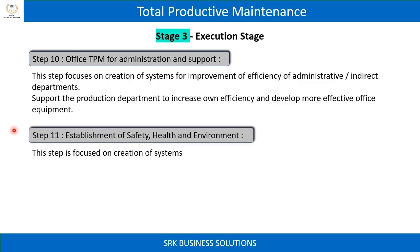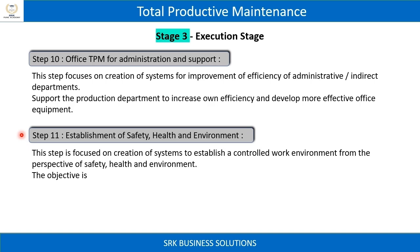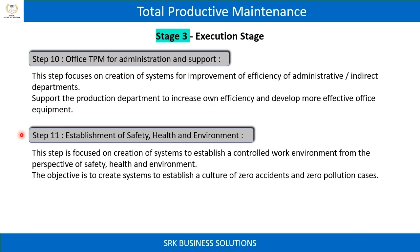Step 11: Establishment of safety, health, and environment. This step is focused on creation of systems to establish a controlled work environment from the perspective of safety, health, and environment. The objective is to create a culture of zero accidents and zero pollution cases.